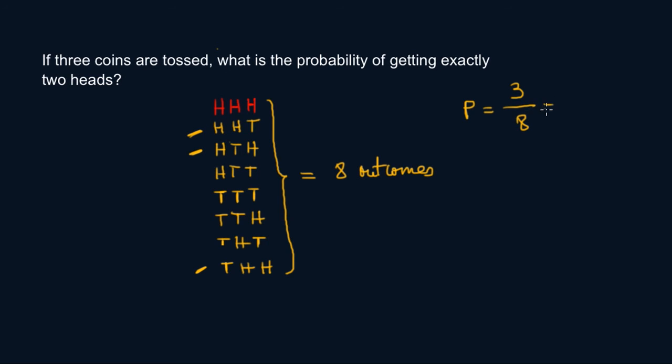The probability equals three out of eight, which is 0.375. So your probability of getting exactly two heads when you toss three coins at the same time is exactly 0.375.